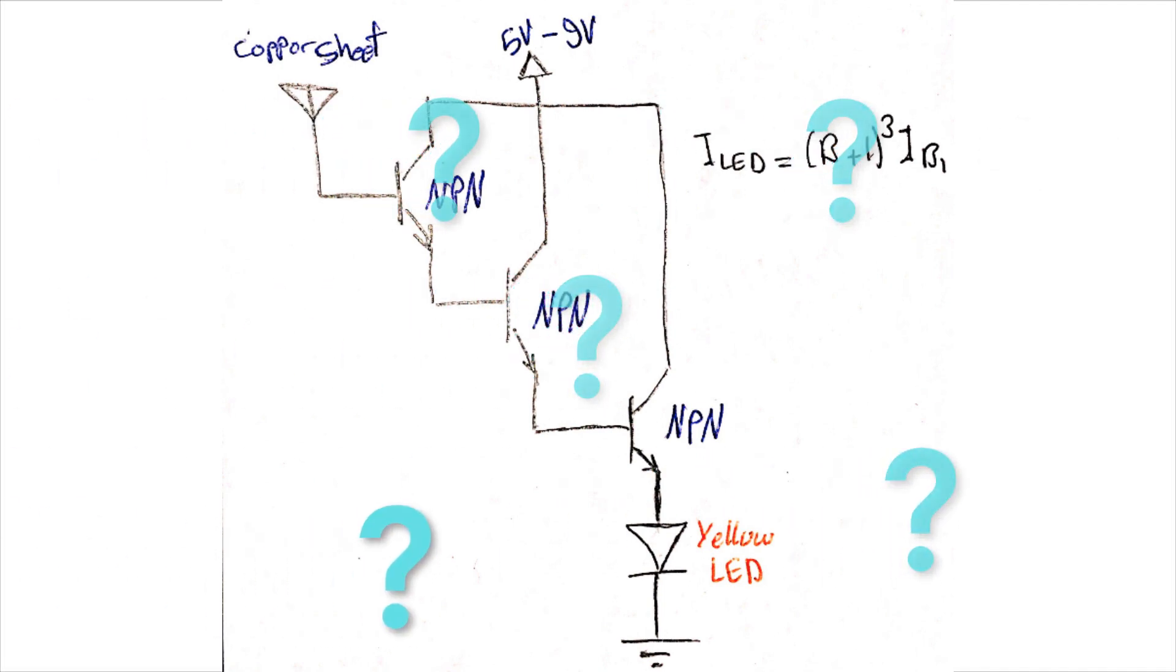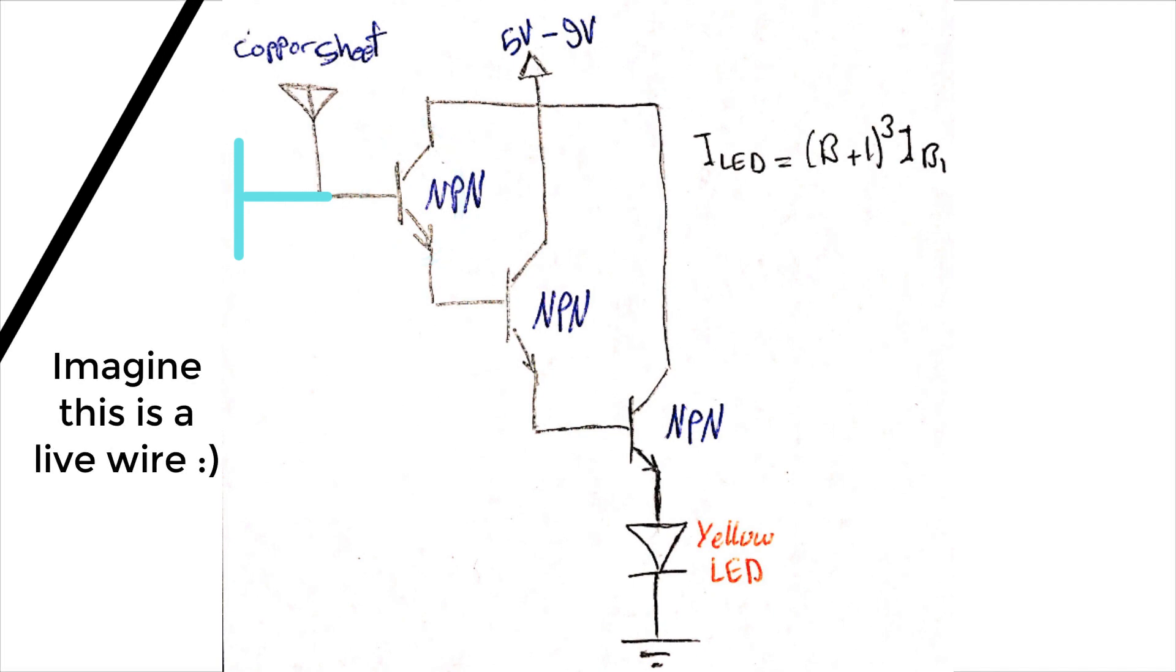So how can this circuit detect the presence of AC voltage then? Well, actually the main idea is quite simple. When connecting an antenna or some copper sheet to this transistor base, it will act as a part of a capacitor. The live wire, on the other hand, will act as the other part of the capacitor.